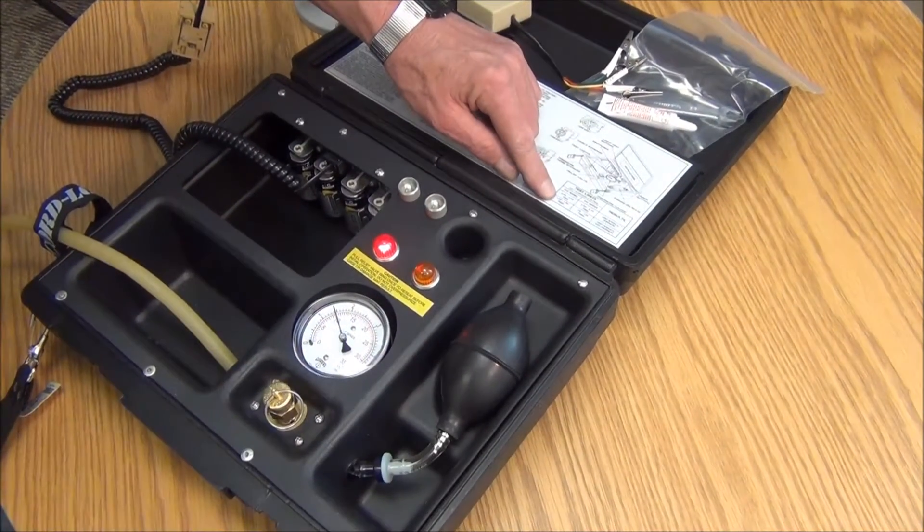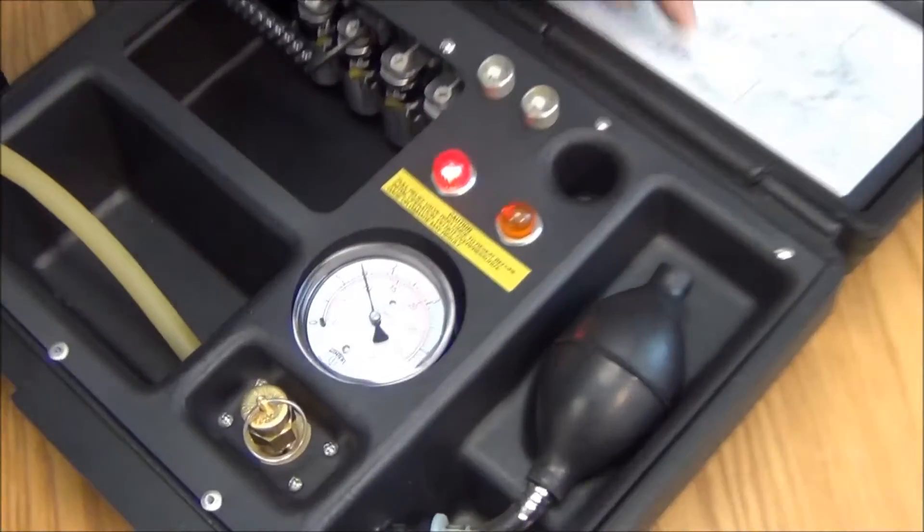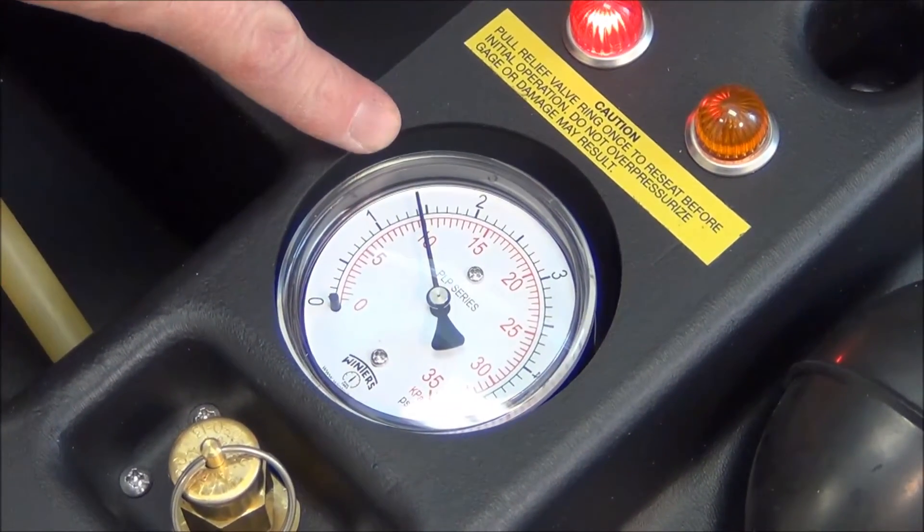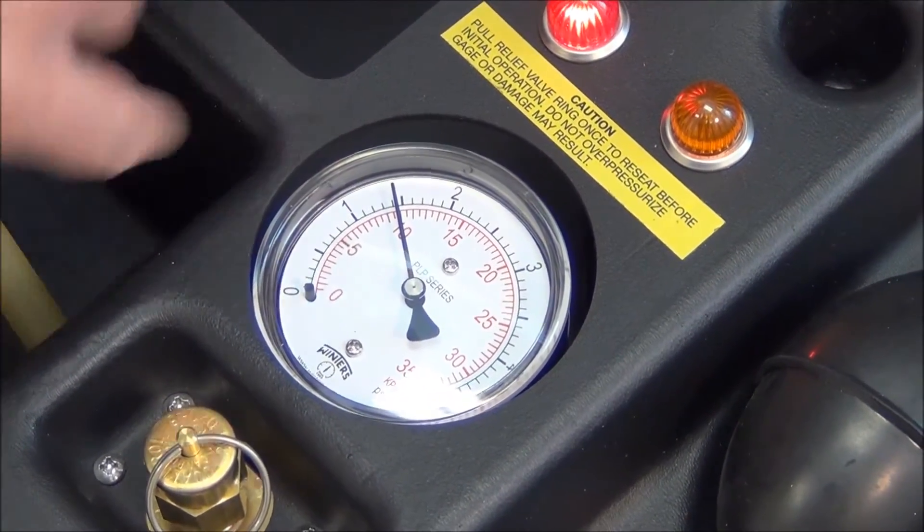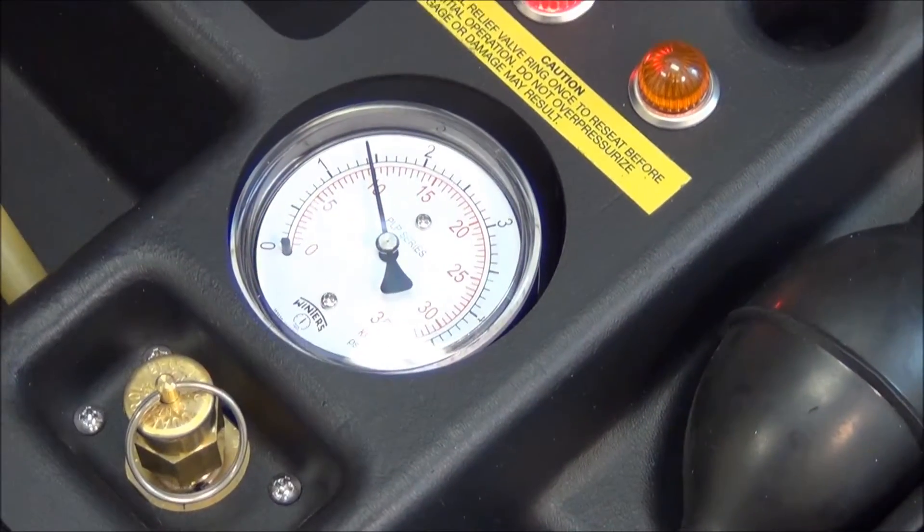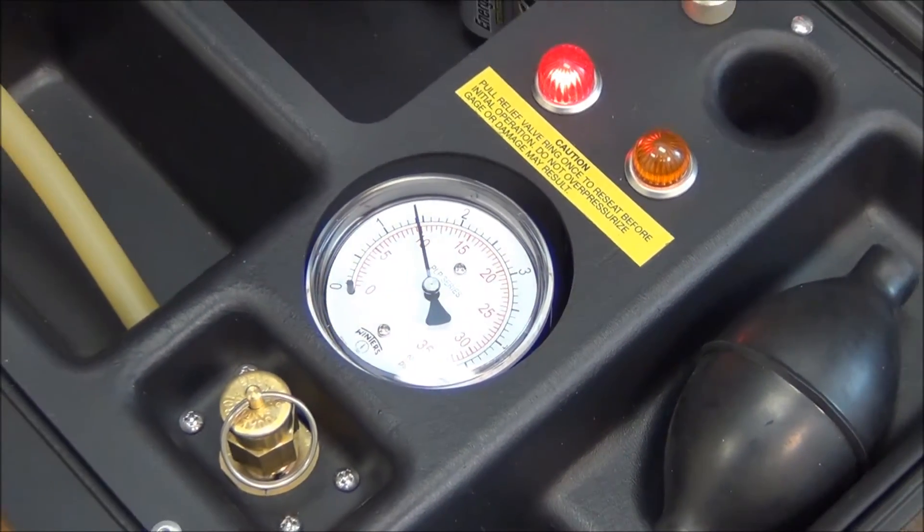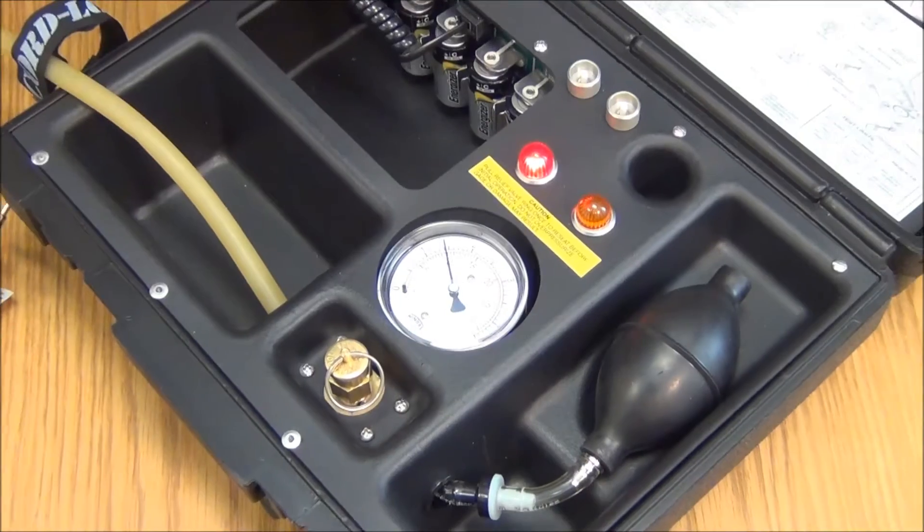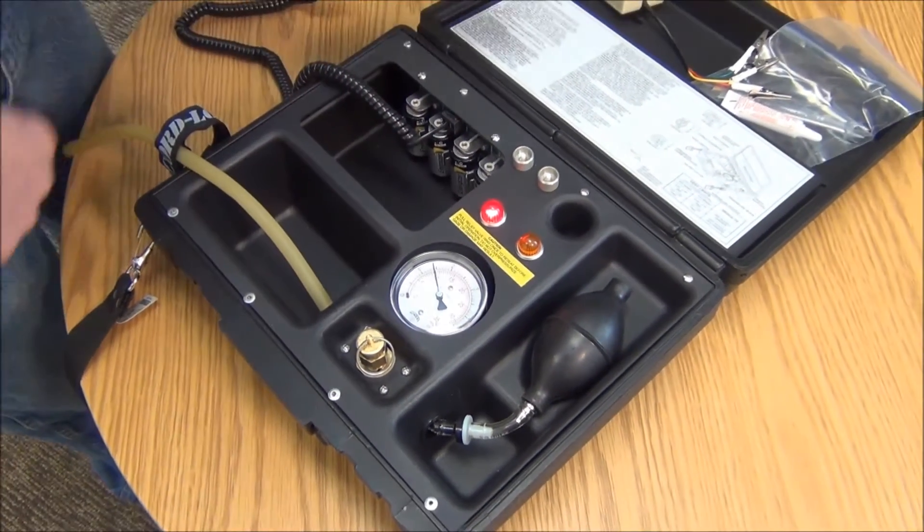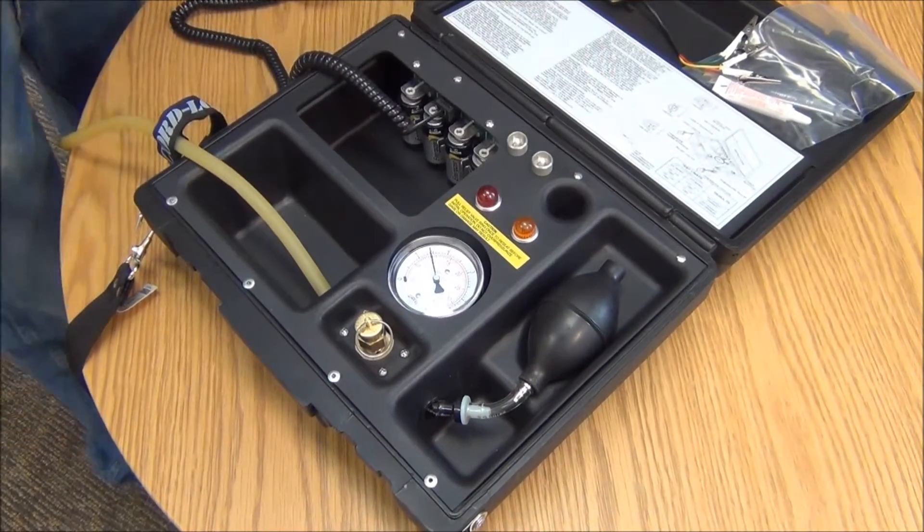I'm a little under 1.5 PSI and the needle looks like it's stabilized. If you start losing pressure, check these fittings to make sure everything's connected good. Typically this bushing might have to be tightened down. It looks like I'm holding pressure just fine, so I'm going to reset the timer.